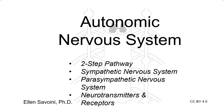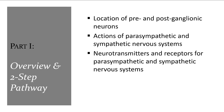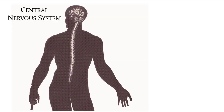The autonomic nervous system. There are four parts that we will go through. The first part is just a general overview and understanding the basic structure, which is known as the two-step pathway.